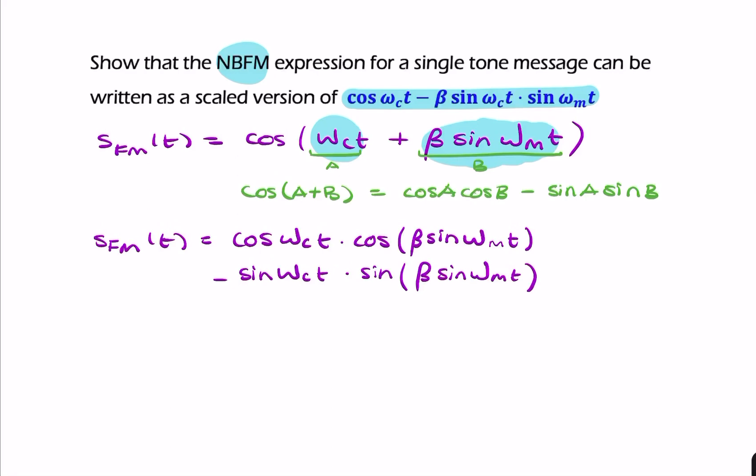This still isn't looking very much like the target. We still haven't made use of the fact that this is narrowband FM. For narrowband FM, remember that β is much less than 1, so these values here are very small.